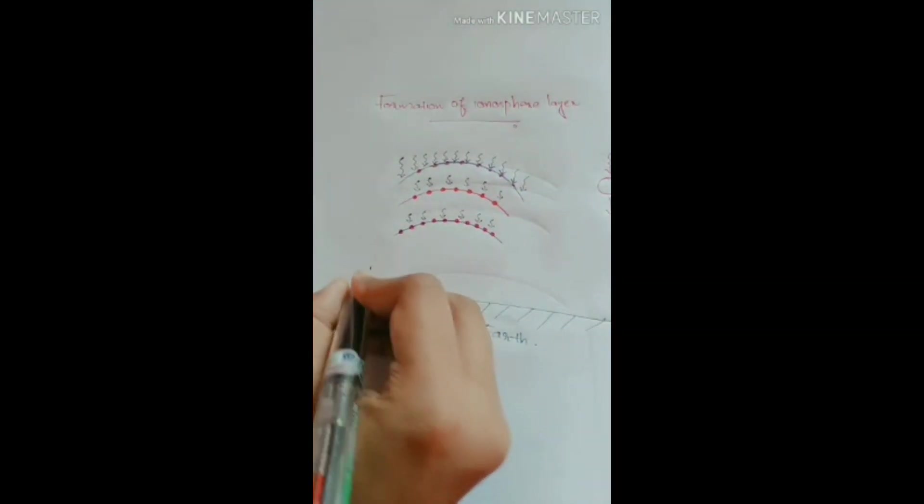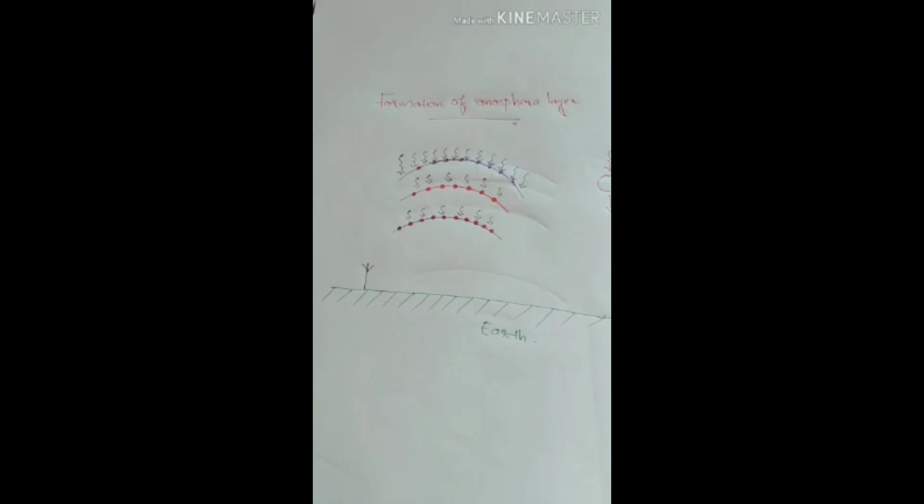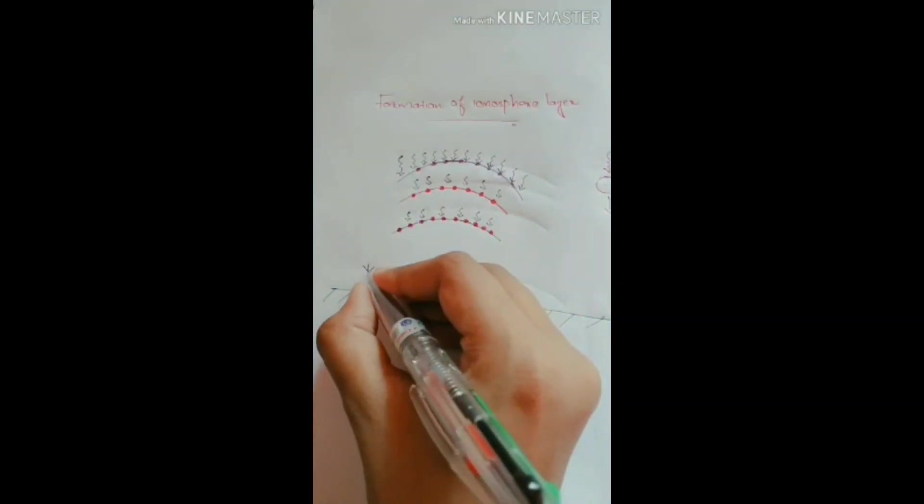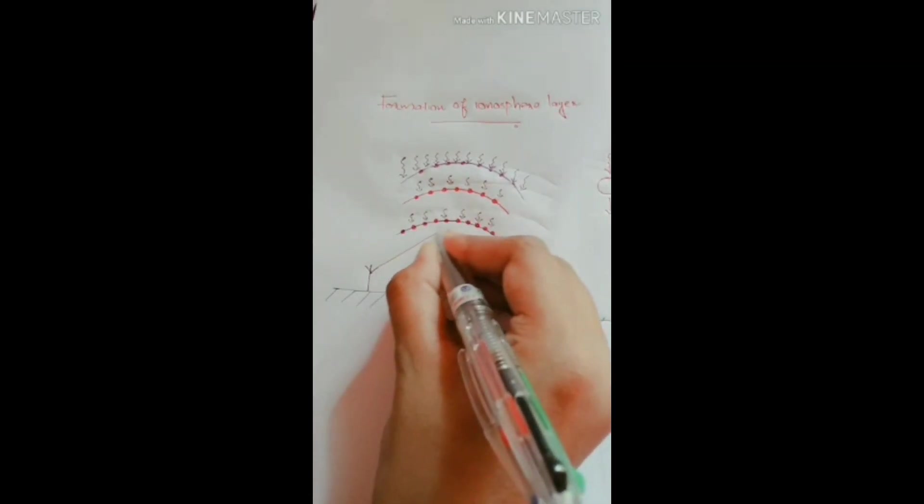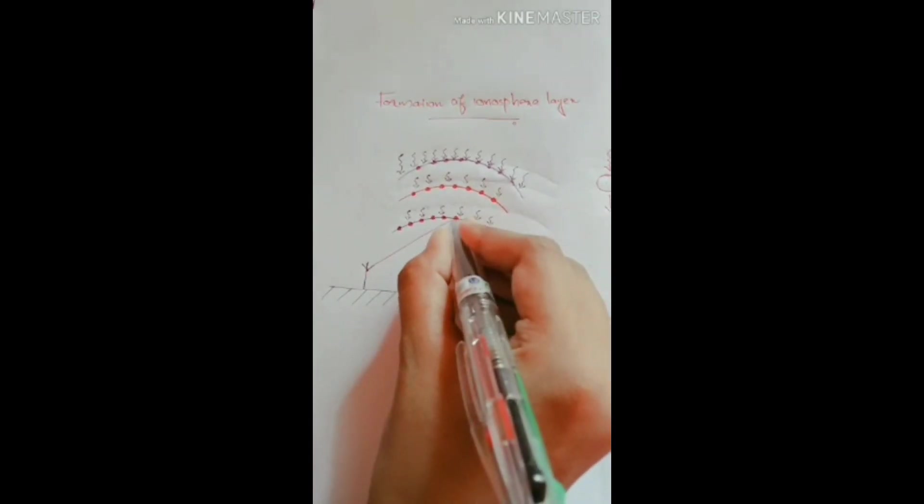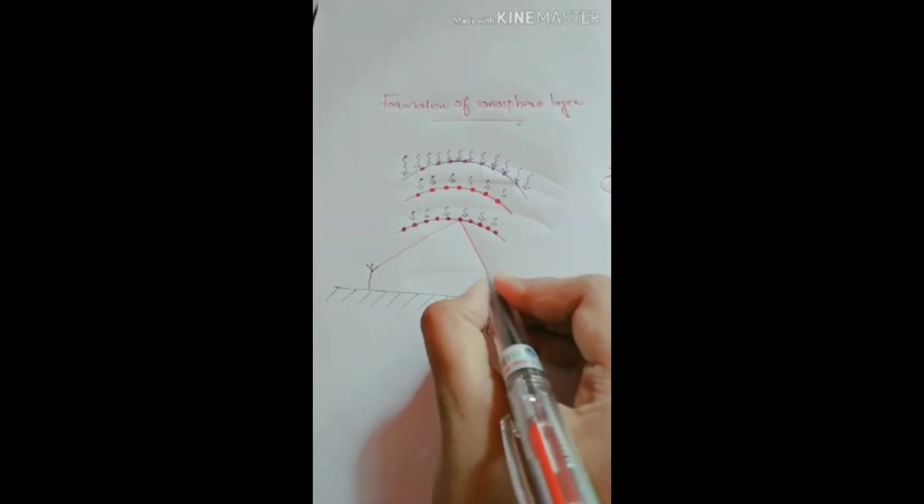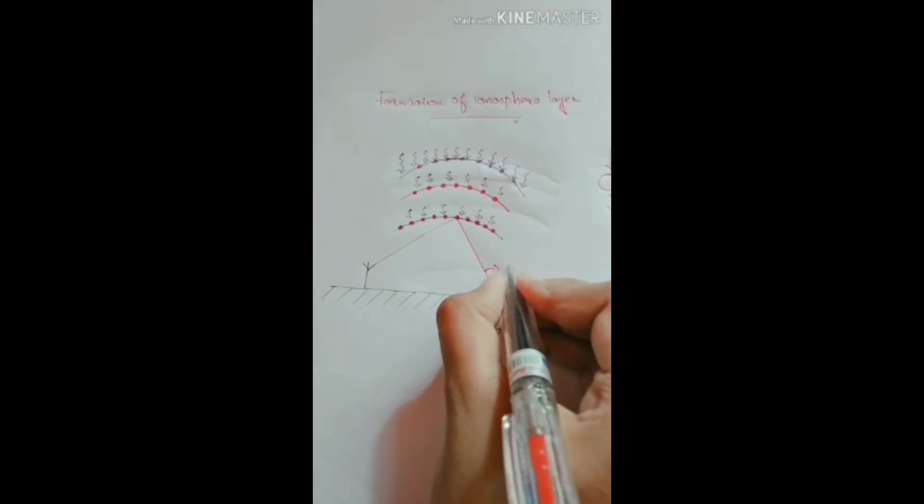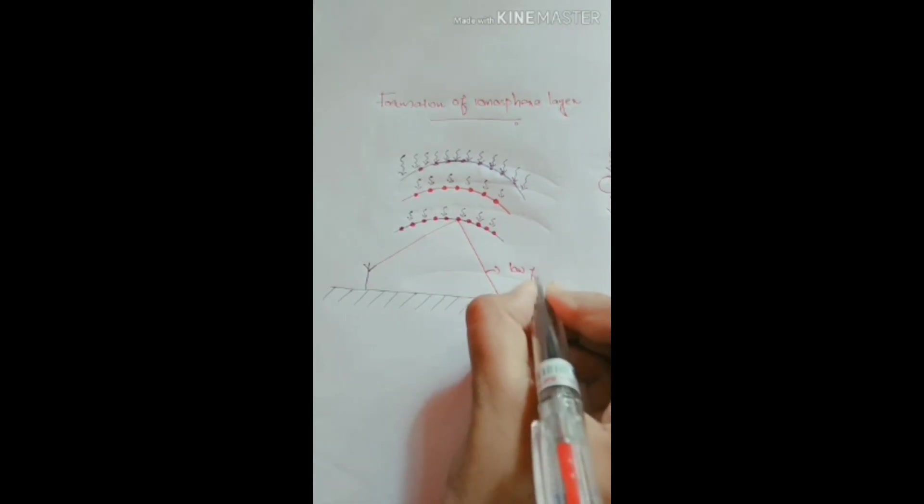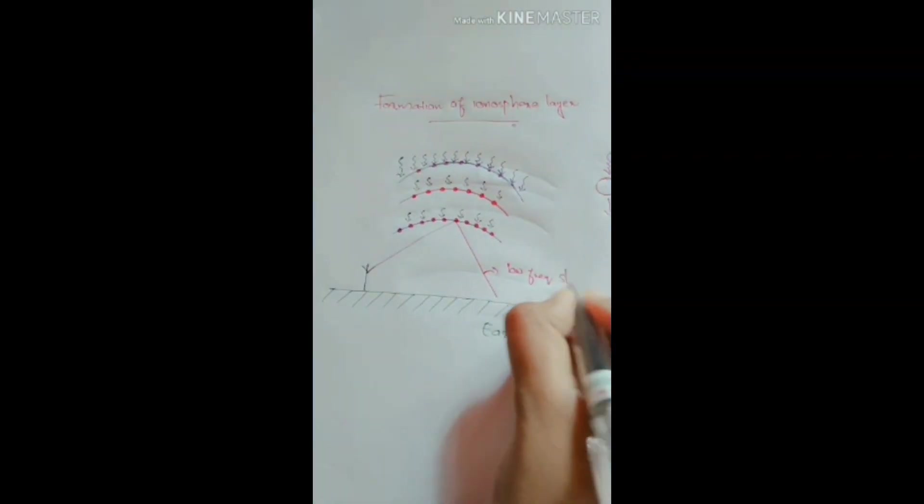Next we are sending a signal from a transmitting antenna. First we are sending a signal with low frequency. Then it will be reflected back by touching the lower layer. This is the low frequency signal.